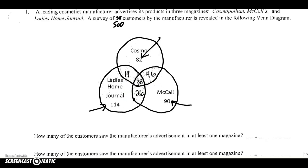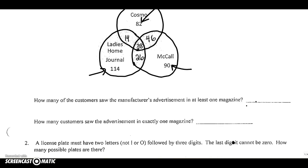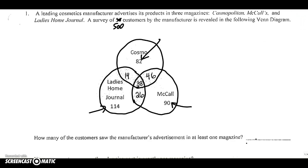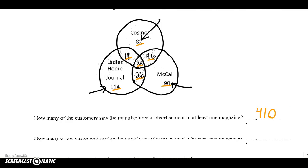First question asks, how many of the customers saw the manufacturer's advertisement in at least one magazine? Well, in at least one magazine would include they just saw it in one magazine, they just saw it in two, or they saw it in all three. That would be every single one of these numbers added together. If you type those in your calculator, you do get a total of 410.